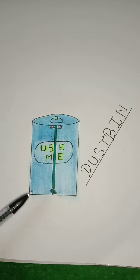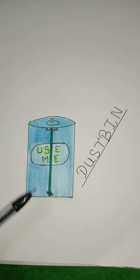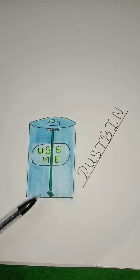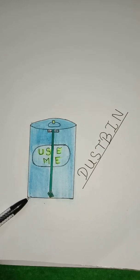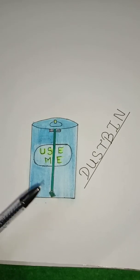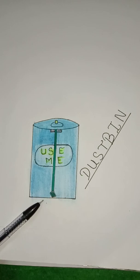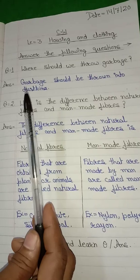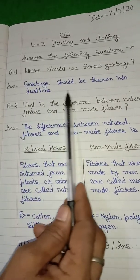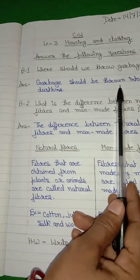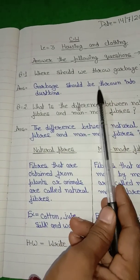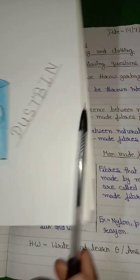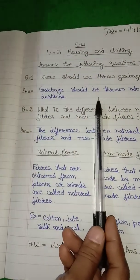Student, here I am showing a picture of a dust bin. Baita aap log ko kya karna hai? Draw and color a picture of the dust bin with question number one. Jab aap question number one ka answer likh len, toh aap log ko yeh dust bin ki picture draw aur color karni hai answer number one ke saath. Okay?